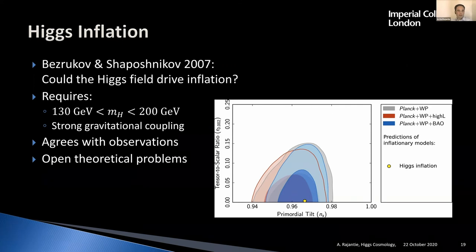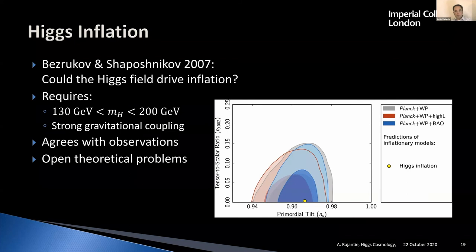Higgs inflation is still the subject of a huge amount of theoretical research, because we don't really understand how to deal with the very strong gravitational coupling that is needed. Therefore we don't know if we can trust our calculations and the story is not complete. But at the level where we can do the calculations, it seems to work very well. This is in many ways the simplest explanation for inflation.